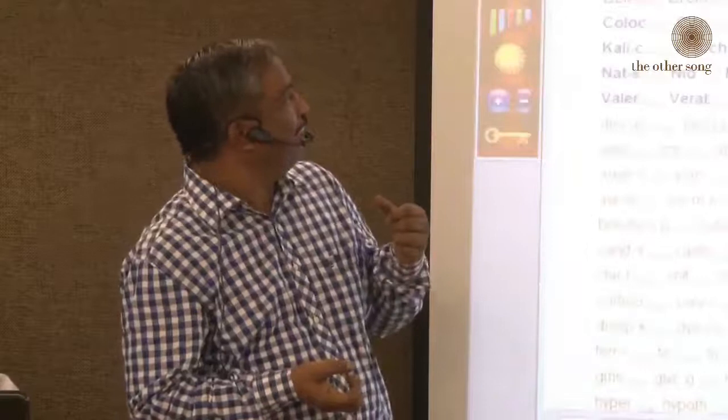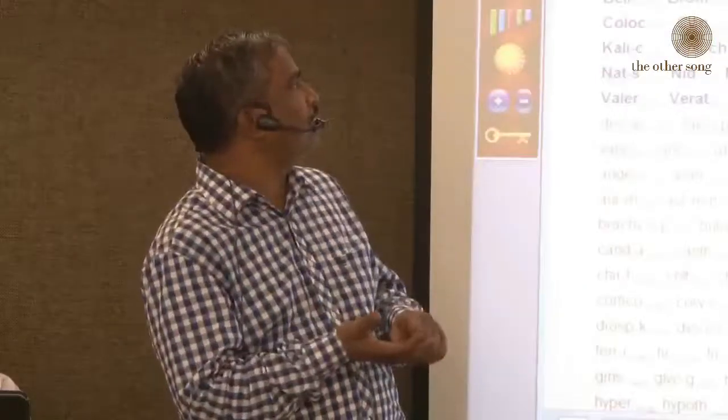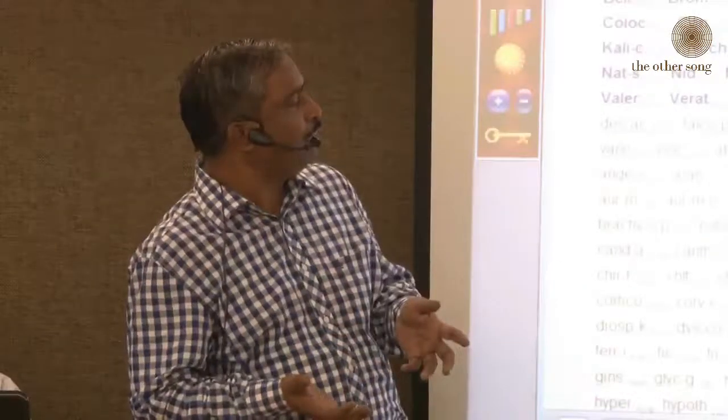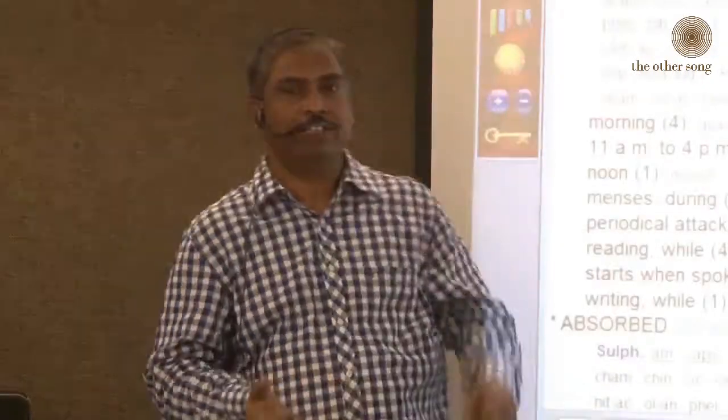Let us start with the first rubric in our repertory. You can take any repertory — we have Complete, we have a few repertories: Complete, Synthesis, the original. Actually, the first rubric in Kent's repertory is 'abandoned.' If you go to the first rubric, it is 'abandoned.' This is the beauty of the advancement of the repertory. The original first rubric is 'abandoned,' and there is no rubric like 'forsaken' there.